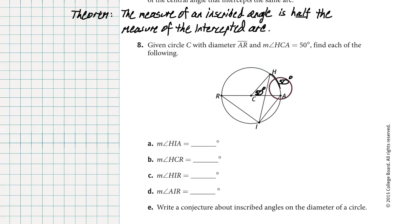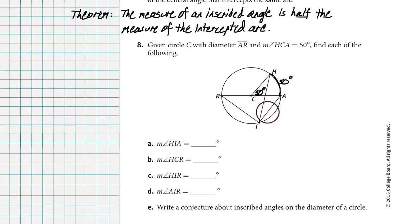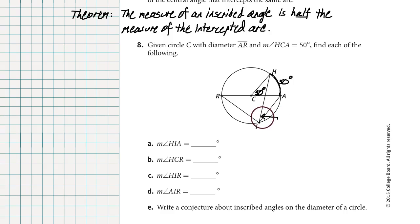Question A: what's the measure of angle HIA? We go from H to I to A. That's an inscribed angle because its vertex, point I, is on the circle. Angle HIA intercepts that same arc as the central angle HCA. The sides of angle HIA touch the circle at point H and at point A, making that same 50-degree arc. Since it's an inscribed angle, it is 25 degrees.